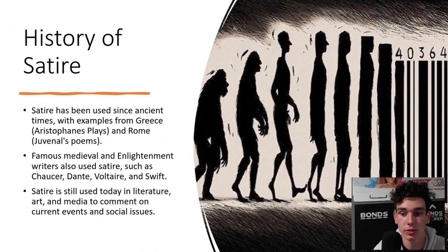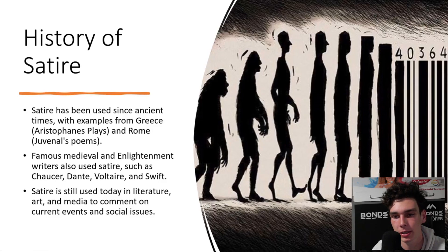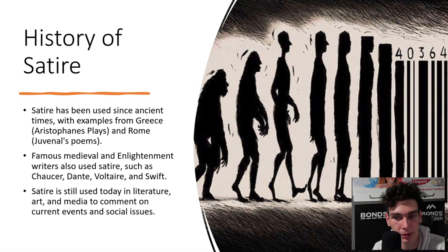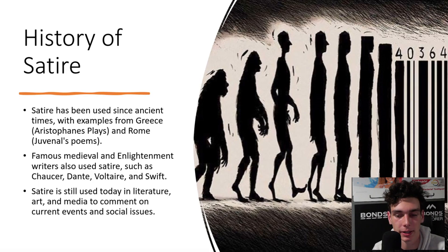Satire has been used in various forms throughout history, with different people using it to critique different aspects of society. In ancient Greece and Rome, satire was used often in the form of plays and poetry. For example, the Greek playwright Aristophanes used satire to mock politicians, while Roman poet Juvenal used it to criticise the corruption of Roman society.